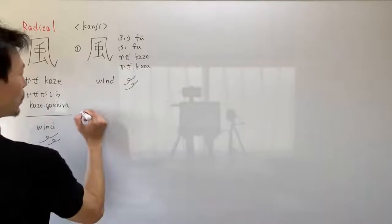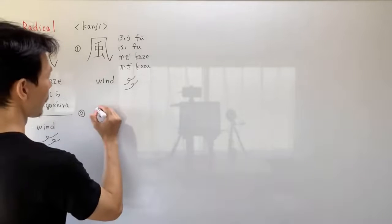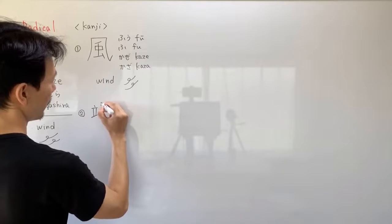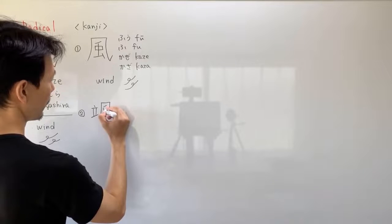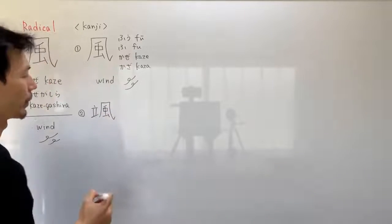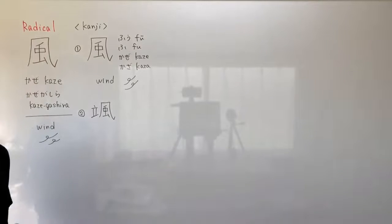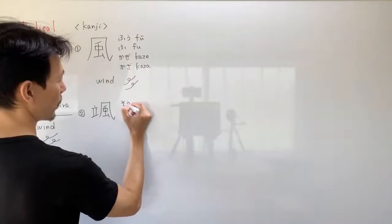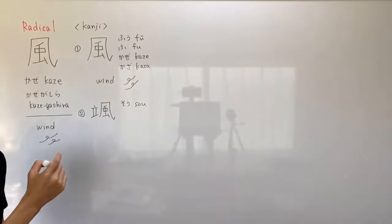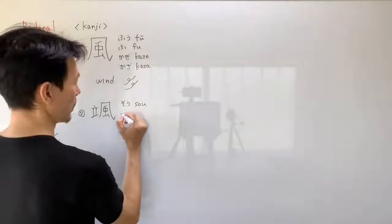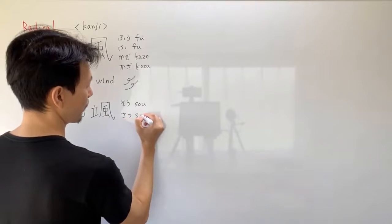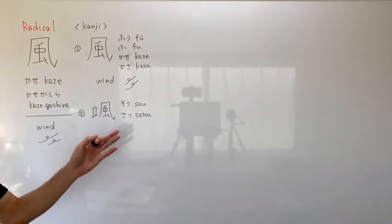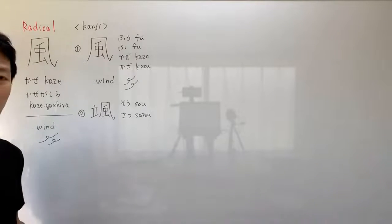Number 2. The readings of this kanji are So and Satsu, and it means gale.